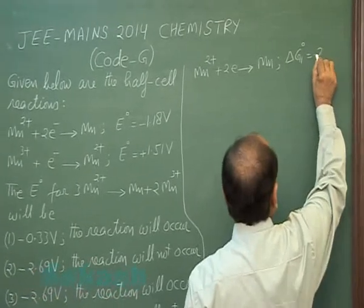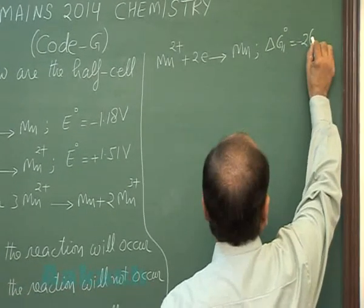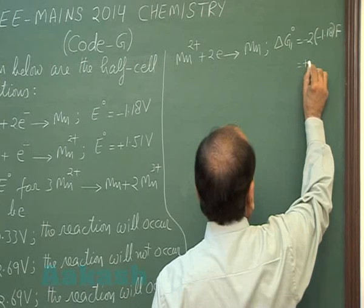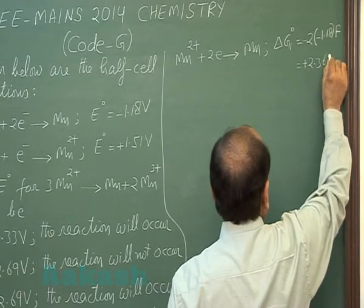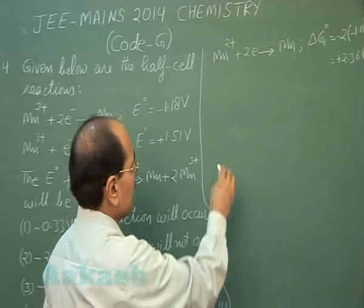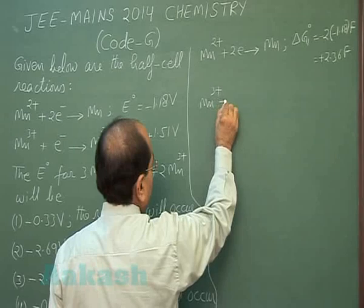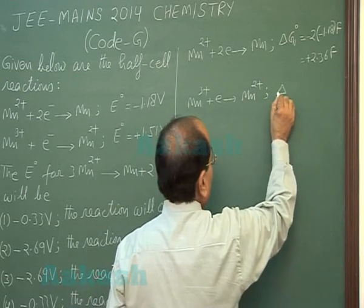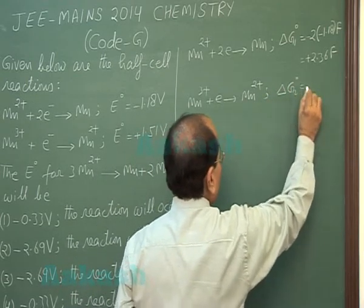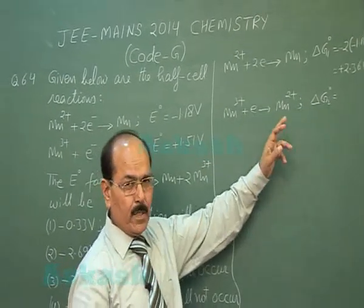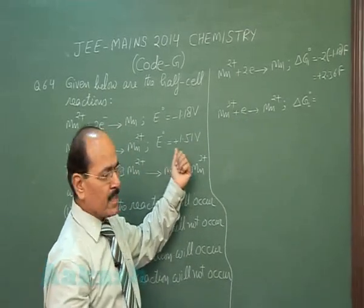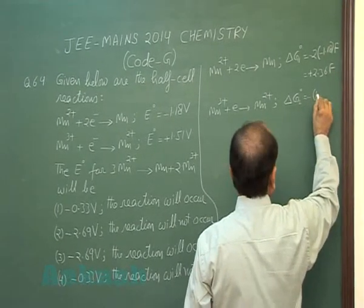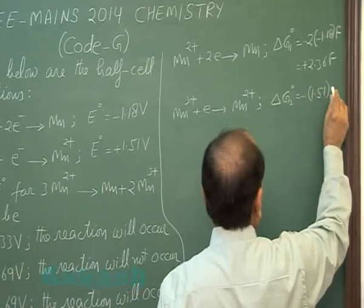For the first reaction, ΔG₁⁰ equals minus 2F times E⁰, which is minus 2 times minus 1.18 F, giving plus 2.36 F. For the second reaction, Mn³⁺ gains 1 electron to give Mn²⁺, so ΔG₂⁰ equals minus F times E⁰ for the second reaction, which equals minus 1.51 F, where n equals 1.